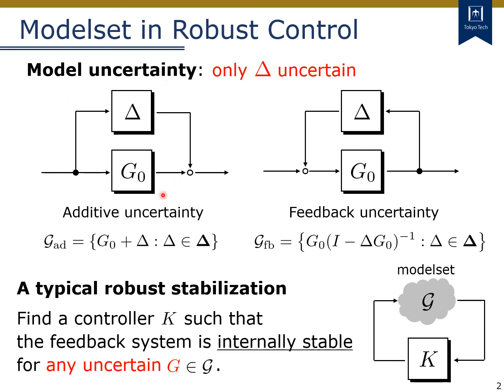An additive uncertainty can be written like this figure, while the feedback uncertainty can be written like this figure. In fact, these uncertain models can be understood as the set of models in which delta is an element of a set of uncertainty, denoted by bold delta. For these descriptions of plant model sets, a typical robust stabilization problem is formulated as: find the controller K such that the feedback system is internally stable for any uncertain G which belongs to the model set script G.